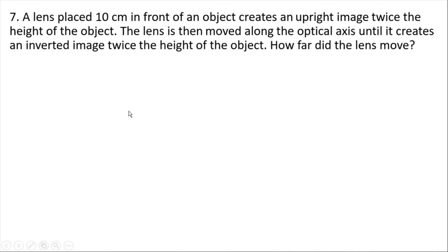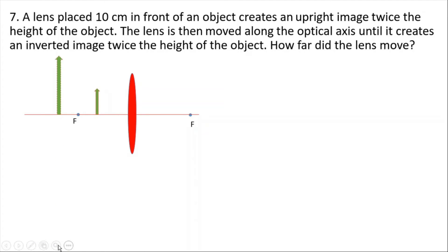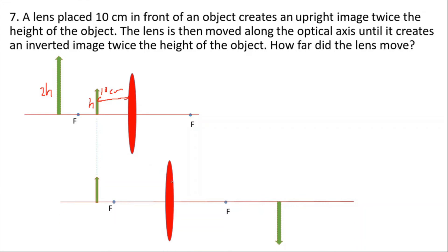A lens placed 10 centimeters in front of an object creates an upright image twice the height of the object. The lens is then moved along the optical axis until it creates an inverted image twice the height of the object. How far did the lens move? The object is 10 centimeters from the lens, image height is 2h and upright, so it is a virtual image.